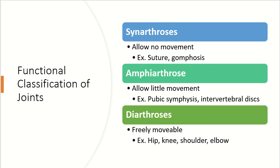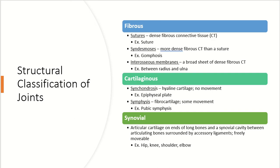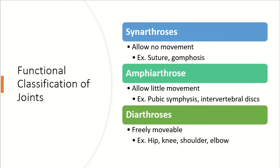Functionally, when we classify joints, synarthroses allow no movement — things like sutures and gomphoses. Amphiarthroses allow just a little bit of movement, like the pubic symphysis and intervertebral discs. Then we have diarthroses, which are freely movable — things like the hips, knees, shoulders, and elbows. A lot of these are the synovial-type joints.